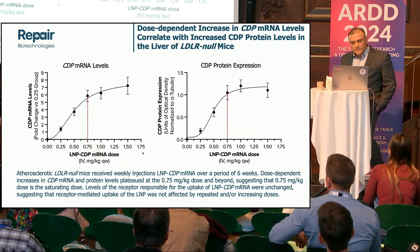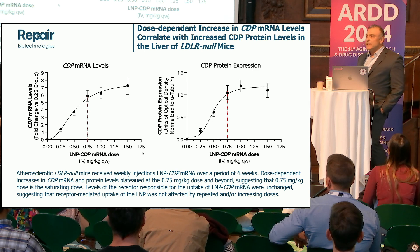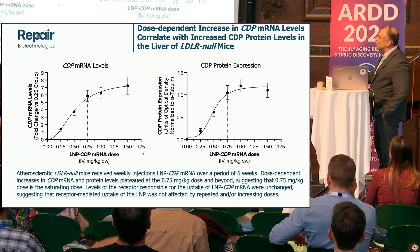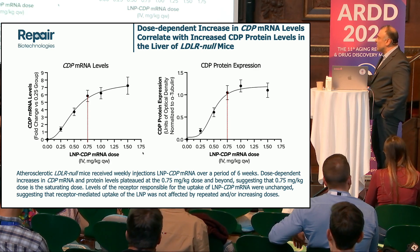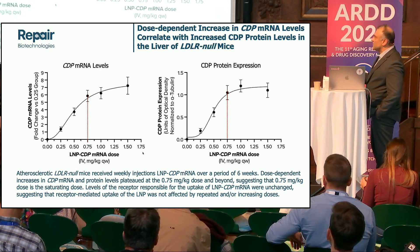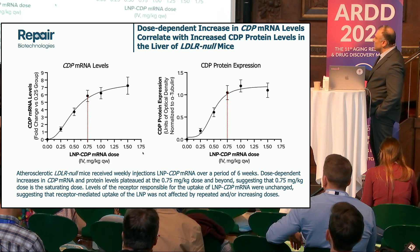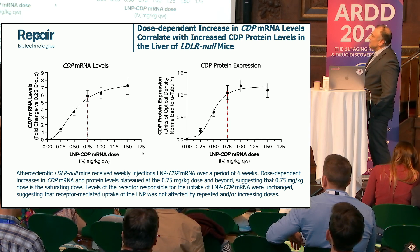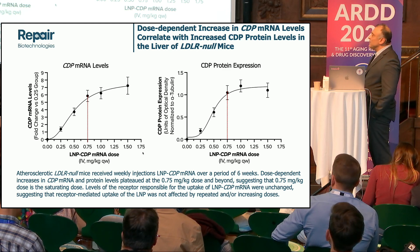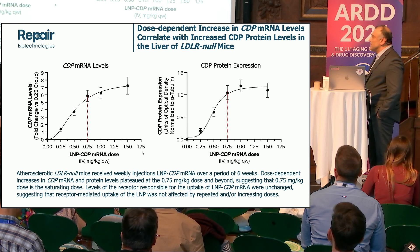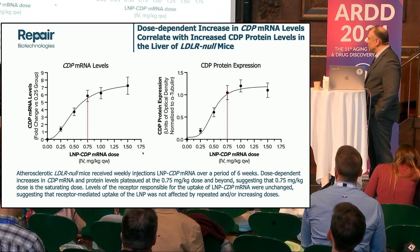Moving on to a more chronic experiment: we took LDL receptor knockout mice and placed them on a high-fat diet for 16 weeks to make them atherosclerotic. Then we gave them weekly injections of LNP-CDP mRNA over a period of six weeks at increasing doses. There is an increase in CDP mRNA levels correlating with the rise in protein levels, and this plateaus at 0.75 milligram per kilogram, telling us that this is the saturating dose. And because the receptor involved in uptake of this LNP is not altered, this tells us that LNP uptake was not affected by repeated or increasing doses.